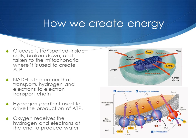Glucose is broken down into smaller molecules and taken inside the mitochondria to produce energy in the form of ATP. NADH is the carrier that transports hydrogen and electrons broken down from the glucose into the electron transport chain. The electron transport chain is located on the inner membrane of the mitochondria — the little folds that are inside the mitochondria, this is the inner membrane. And within the inner membrane there is the electron transport chain. NADH donates hydrogen electrons to the electron transport chain, and this builds a gradient inside the intermembrane space, and using that buildup of pressure, ATP is formed.